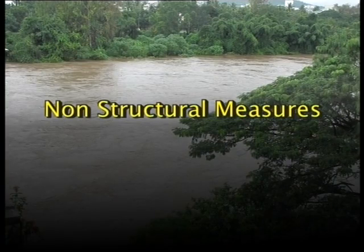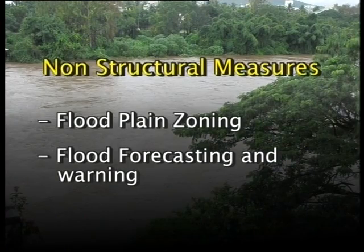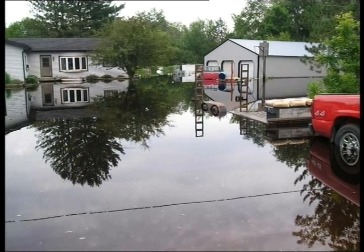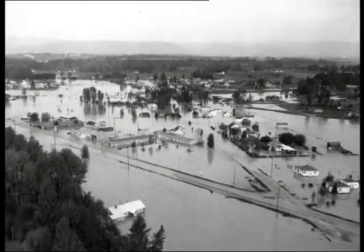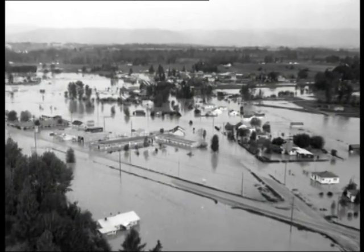Non-structural measures include flood plain zoning and flood forecasting and warnings. Flood plain zoning includes restrictions on the use of land on flood plains, which can reduce the cost of flood damages. Local governments may pass laws that prevent uncontrolled building or development on flood plains to limit flood risk and protect nearby property.